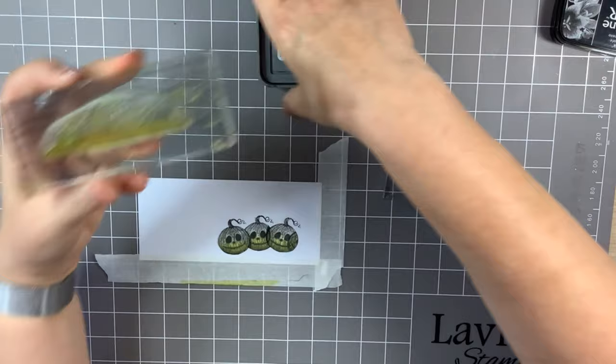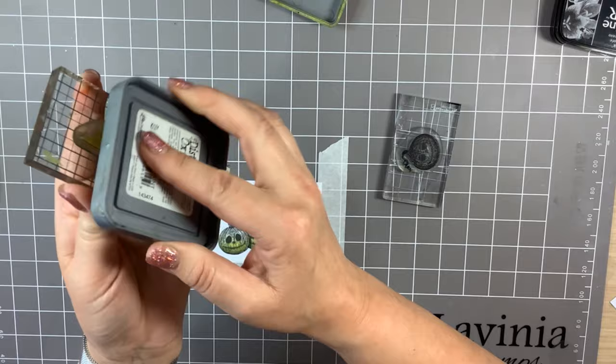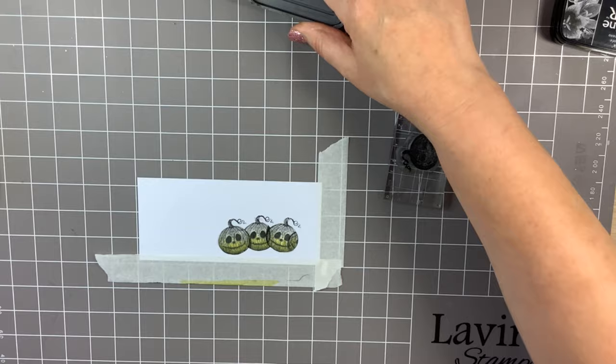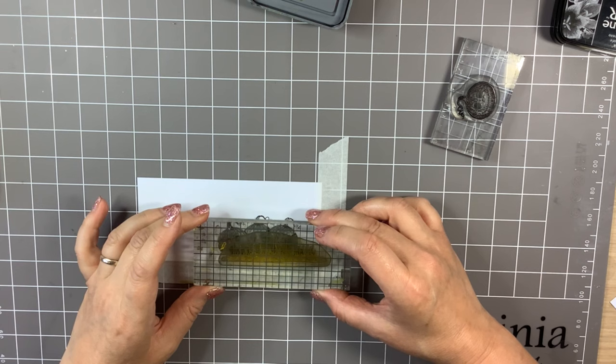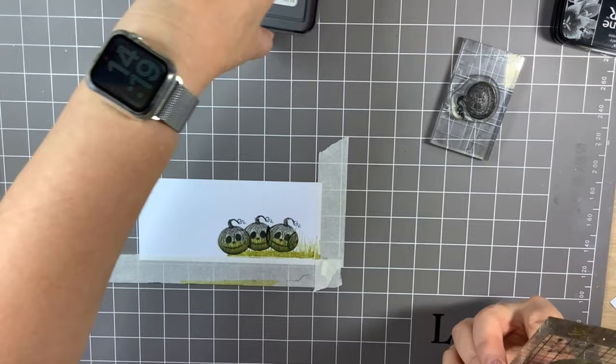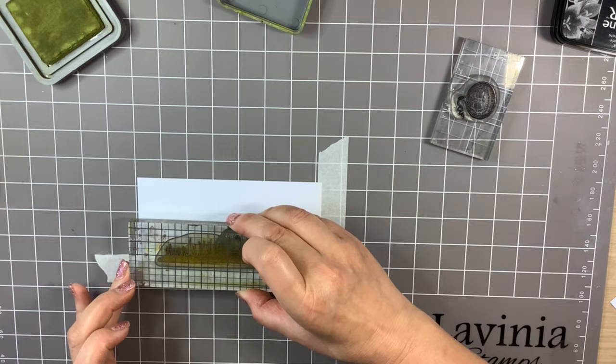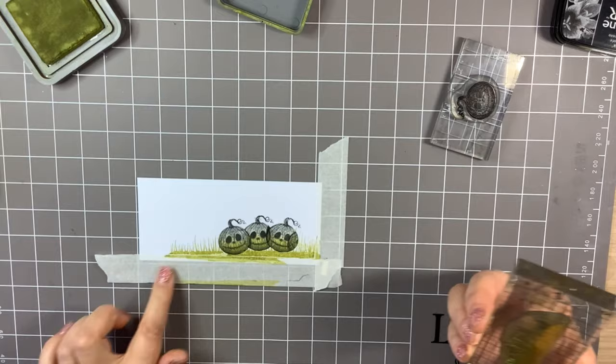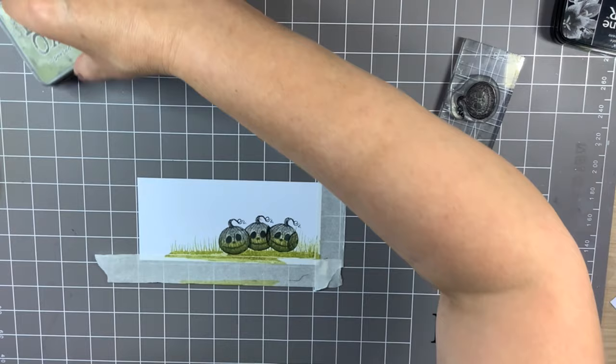I'm going to use Distress Oxide Peeled Paint and the Silhouette Grass Stamp. Now I wouldn't usually use Distress Oxide on a Silhouette Stamp but it's perfect for this purpose because I want it to have an almost watercolor effect. So I'm going to stamp it on so it sits underneath the pumpkins, and again just so that it creates some sort of dimension with the second stamping. I don't want it to come to the very end of the card. I want that area to be white.